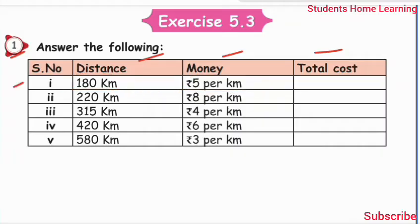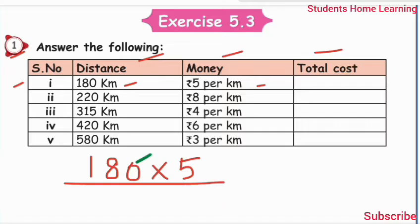Exercise 5.3: Answer the following. Distance, money, and total cost are given. First sum: distance 180 km, money rupees 5 per km. 180 multiply by 5: 5 times 0 is 0, 5 times 8 is 40, write 0, carry 4. 5 times 1 is 5, plus 4 is 9. Total cost rupees 900.